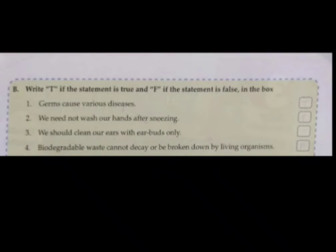Next, Exercise B — True or False. Write T if the statement is true and F if the statement is false. Statement one: Germs cause various diseases. As we discussed, germs are pathogens that cause diseases like the common cold, cough, malaria, and dengue. So this statement is true — we write T.